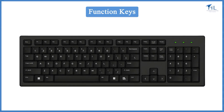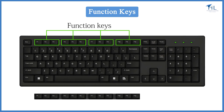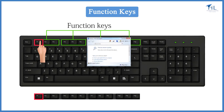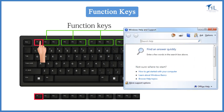The top row of the keyboard contains 12 function keys marked from F1 to F12. Every function key has a unique role and meaning. For example, pressing the F1 key opens the help of the application you are using.